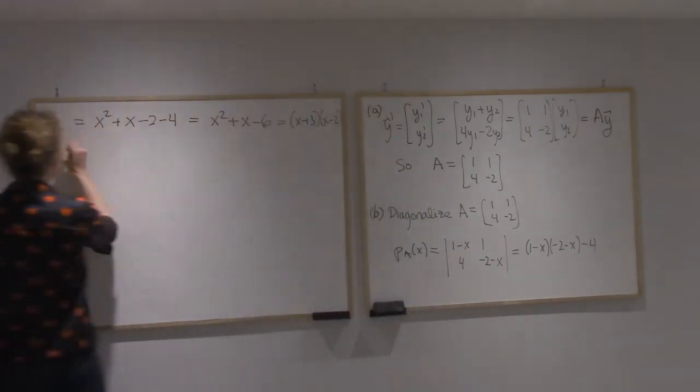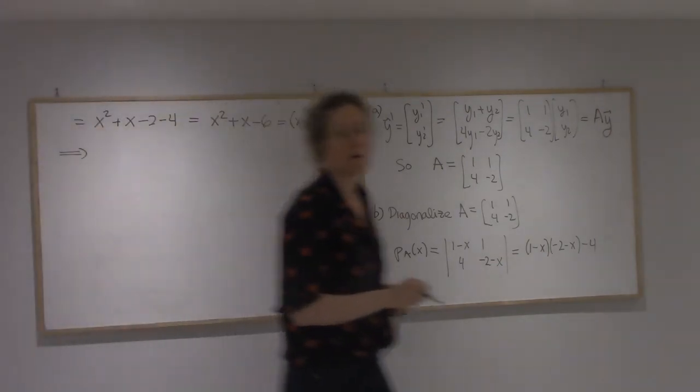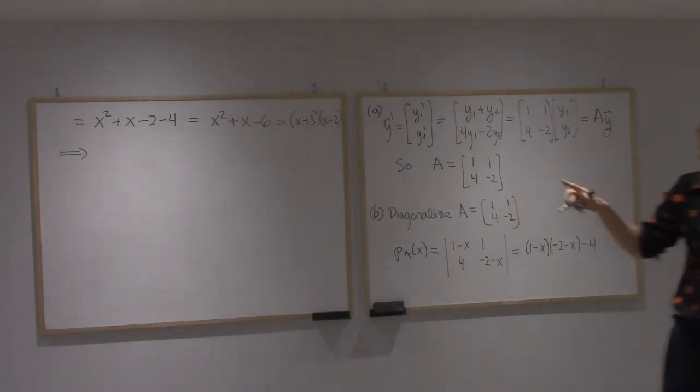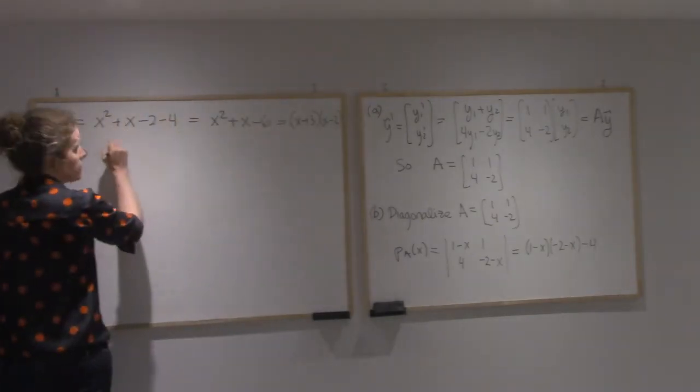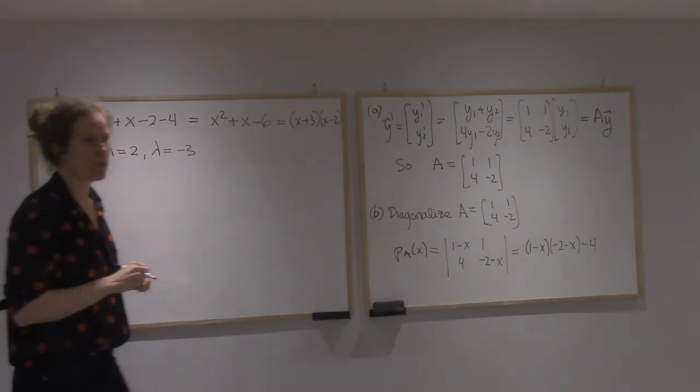And so my eigenvalues will be the zeros of this polynomial. So I will get two different eigenvalues. I'll get 2 and minus 3.